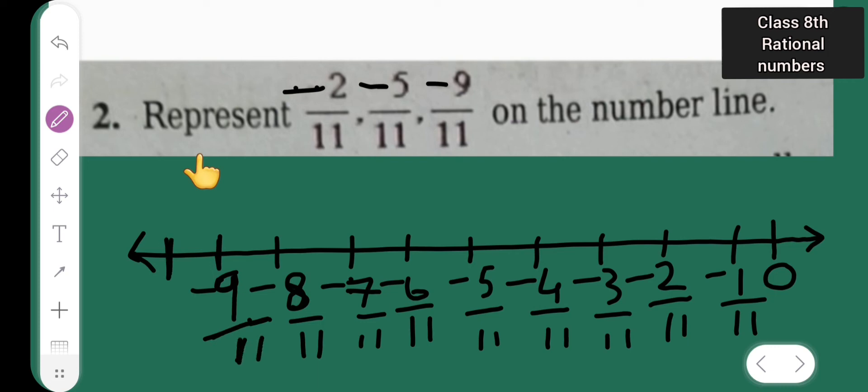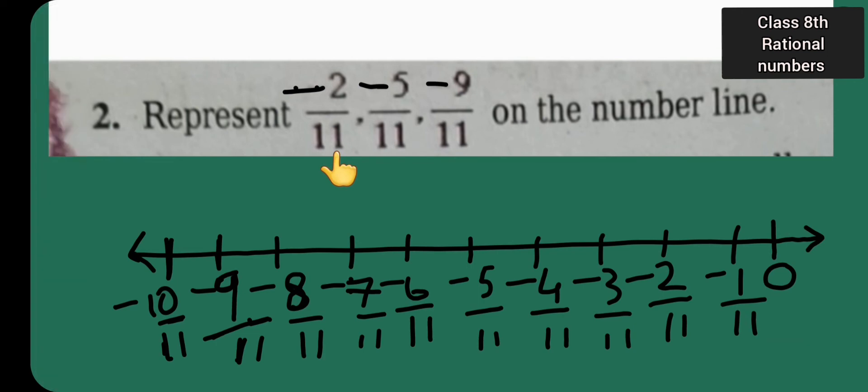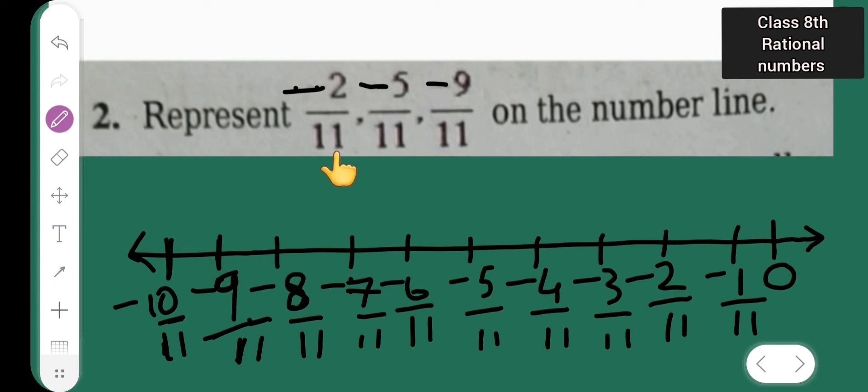Here there is -10/11. But here what I have said is we have to represent these numbers on the number line. That is -2/11, so what I will do is put a circle over here, -2/11.